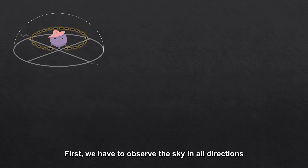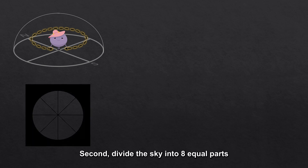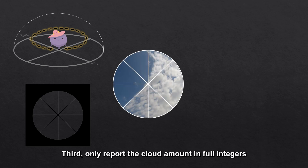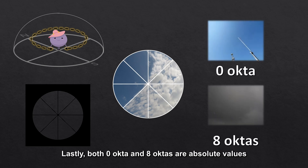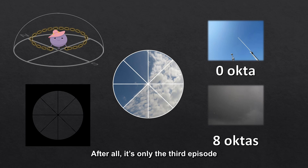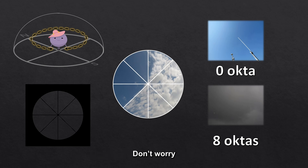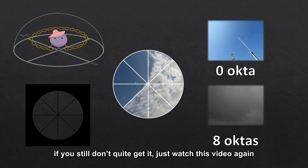Let me summarize. First, we have to observe the sky in all directions. Second, divide the sky into eight equal parts. Third, only report the cloud amount in full integers — we count the extra portion of cloud directly as one octa, so we report 1.5 octas as two octas, and 5.1 octas as six octas. Lastly, both zero octa and eight octas are absolute values. If you still don't quite get it, just watch this video again.